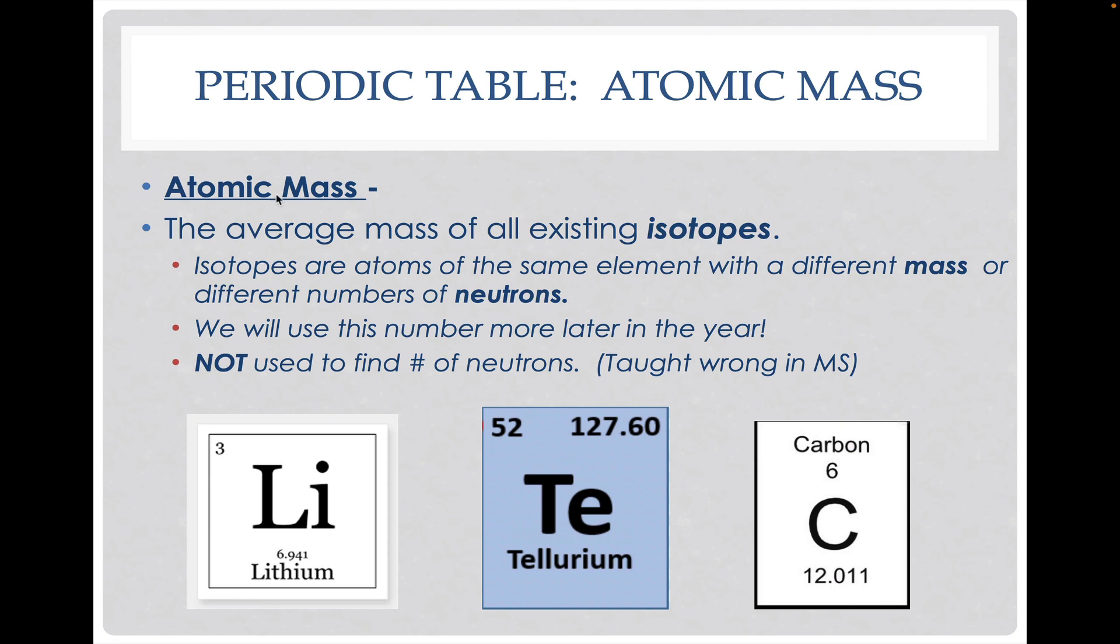Now the other big number we see on there is called the atomic mass. It's an average of all the isotopes that we find in our universe of that element. That's why it's not a whole number, because it's an average of all the different versions of tellurium, of lithium, or of carbon as our examples here. The reason why we get different isotopes is because we change the number of neutrons that those elements have, not protons, because protons always stay the same.